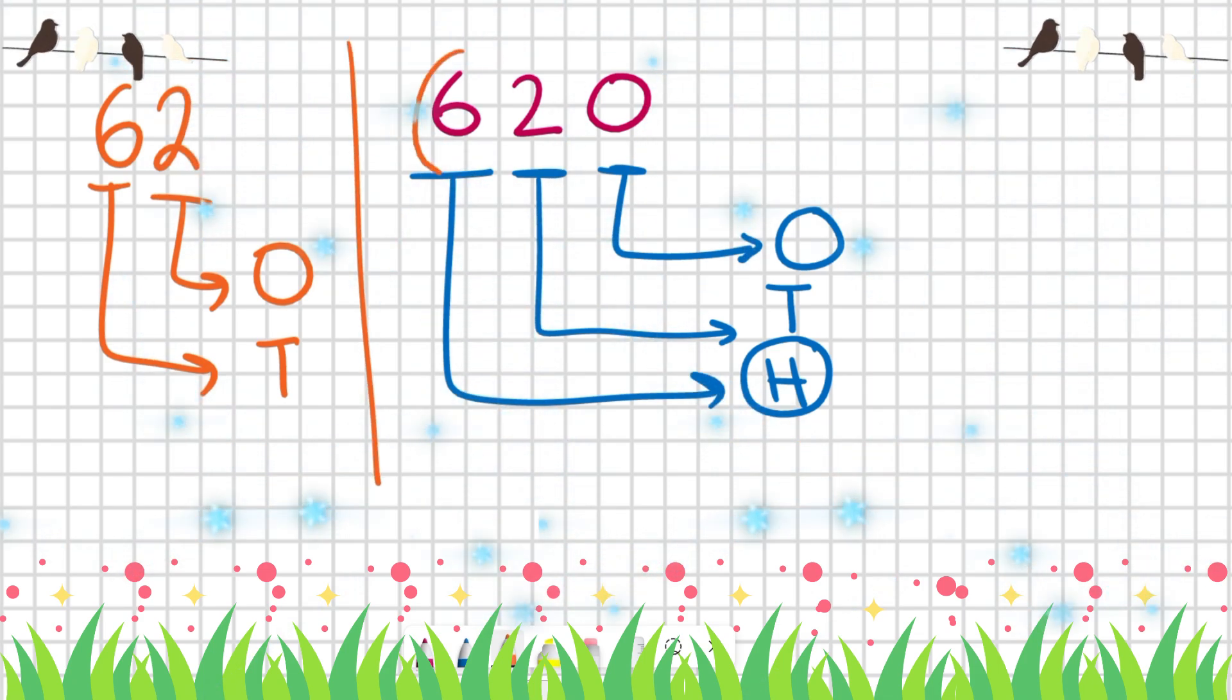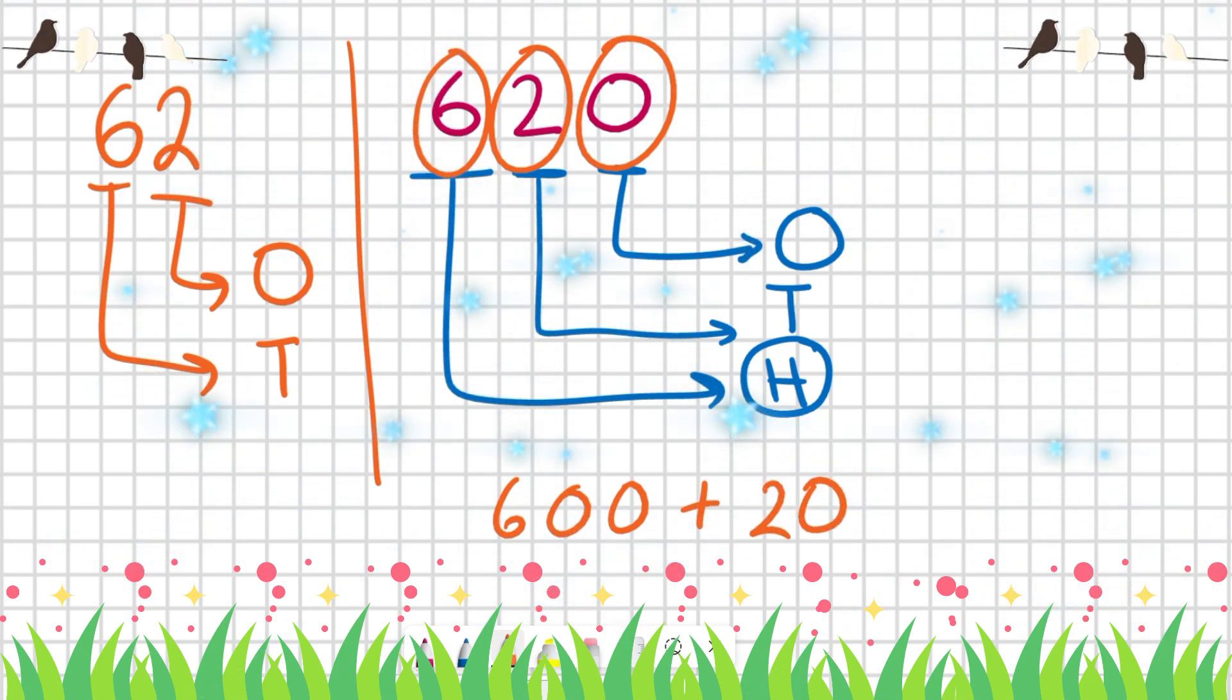We can also write it like six hundreds plus two tens plus zero ones, which means 620, or six hundred and twenty.